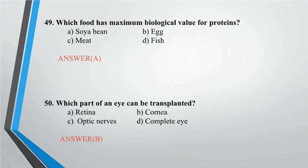Question 49: Which food has maximum biological value for proteins? A. Soya bean, B. Egg, C. Meat, D. Fish. Answer: A.